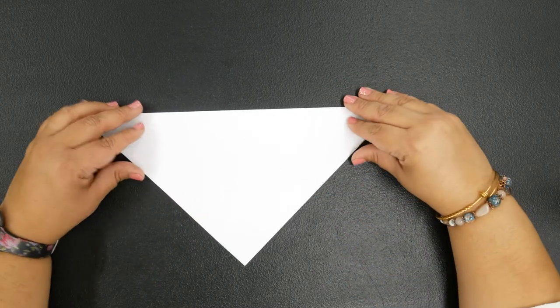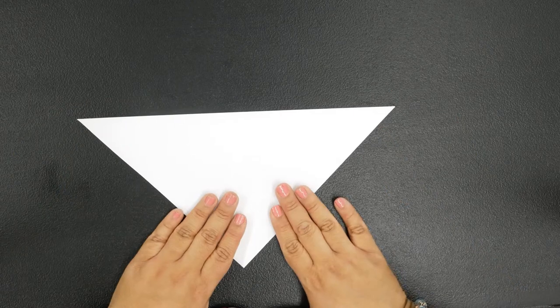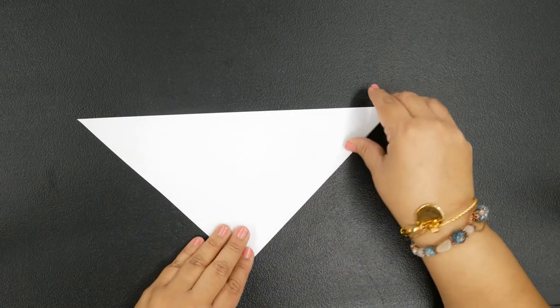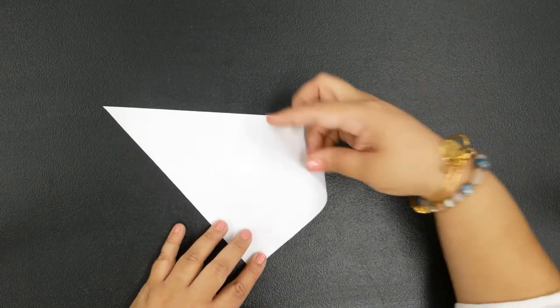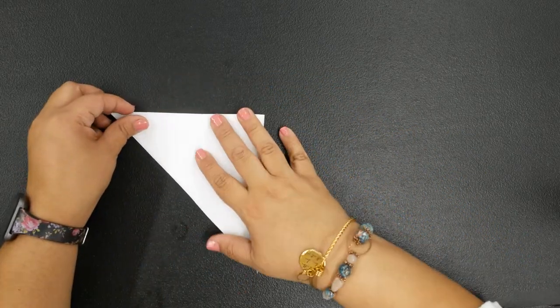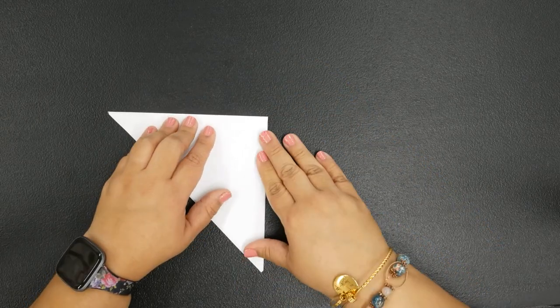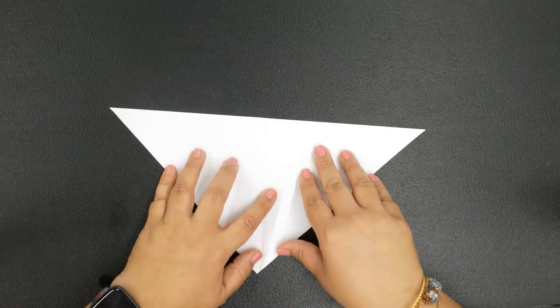Make sure that your triangle is facing downward so the openings are towards the bottom towards you. Now we're going to bring the right over to the left and fold that right in half just like this. Go ahead and open it back up.